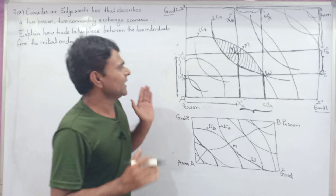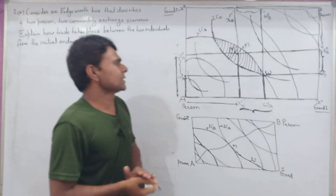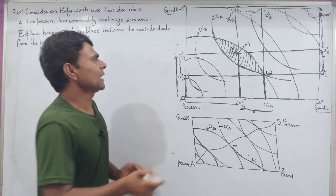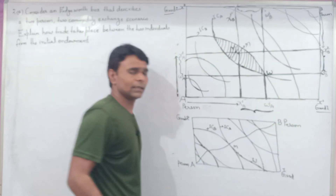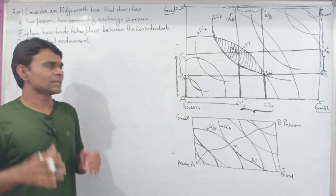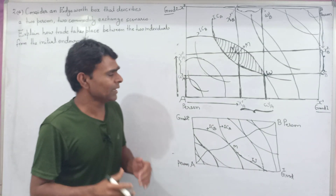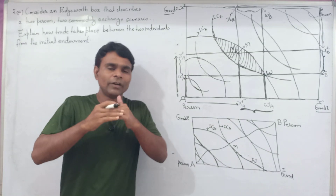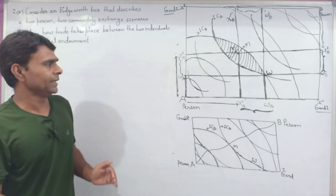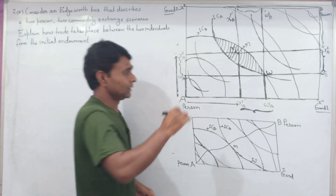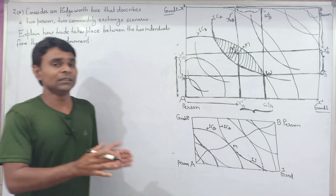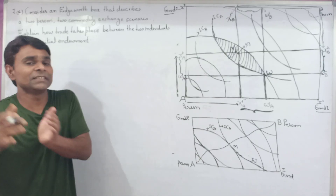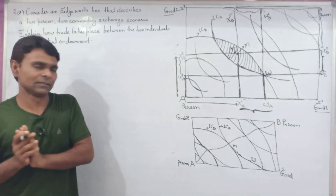Any allocation inside the shaded area represents that both individuals — person A and person B — are better off than at their initial endowment.